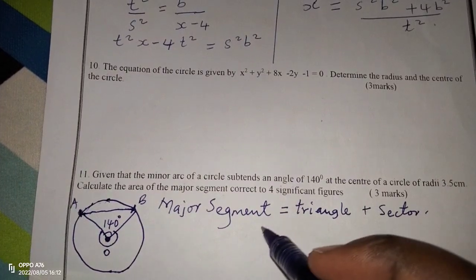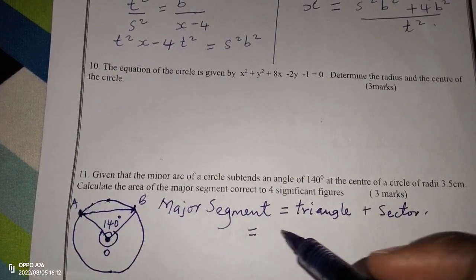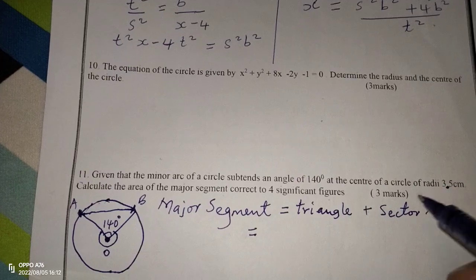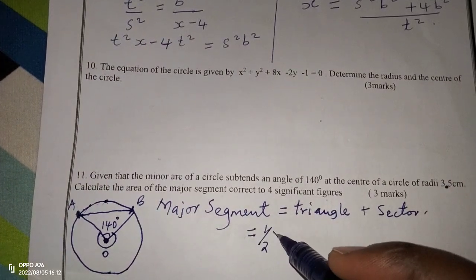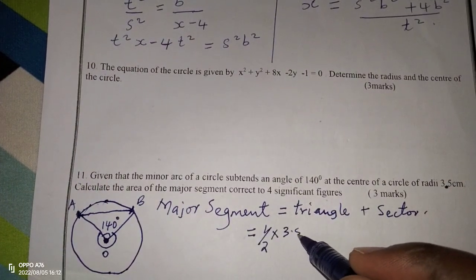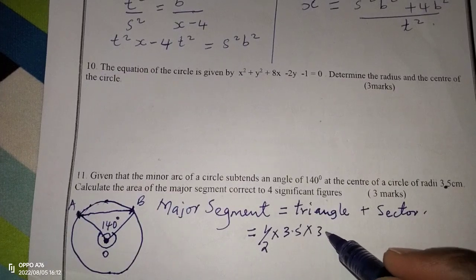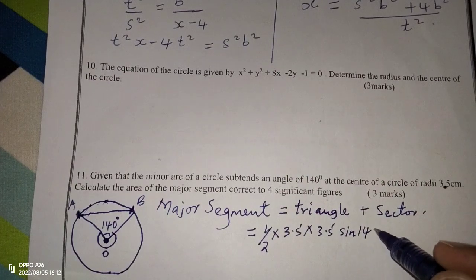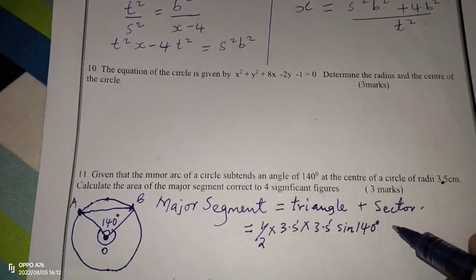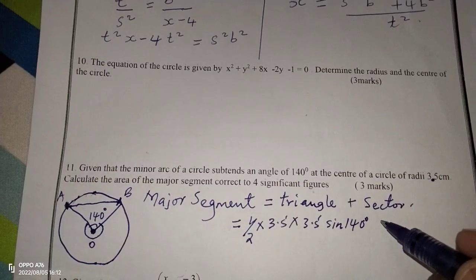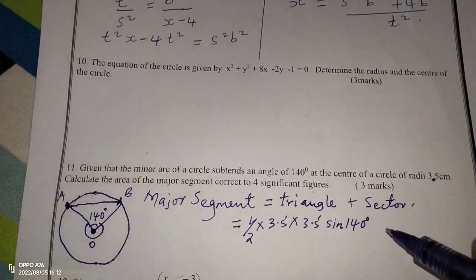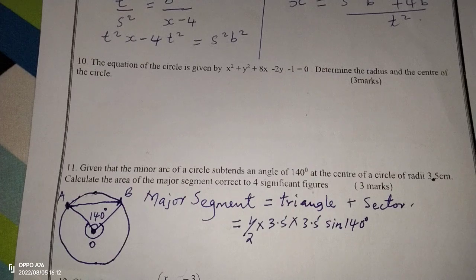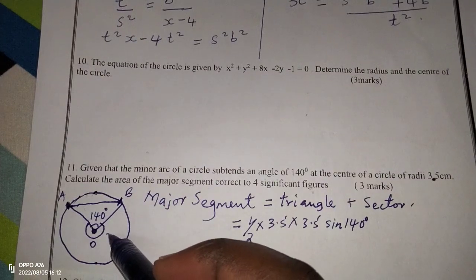The major sector for this case. Therefore, the triangle's area, because we are given the radius as 3.5, then we can use a half multiplied by one side multiplied by the other side, then sine of the angle in between which is 140. So we should master that, even if we are using an angle of 140 degrees for the triangle, then for the sector it will be 360 minus 140. So that we say we are using 220.